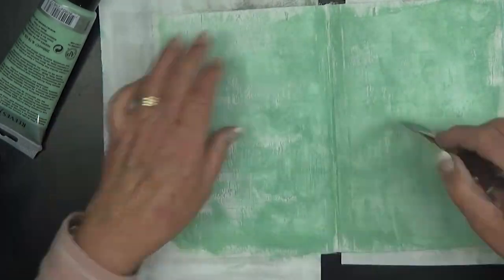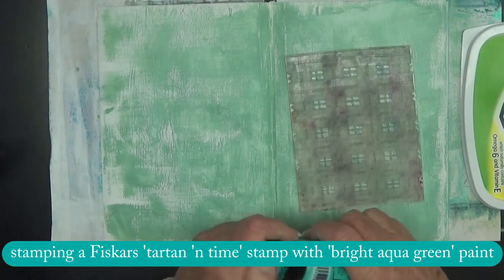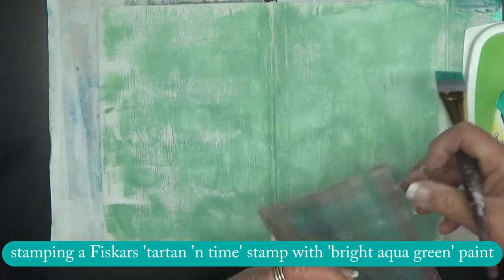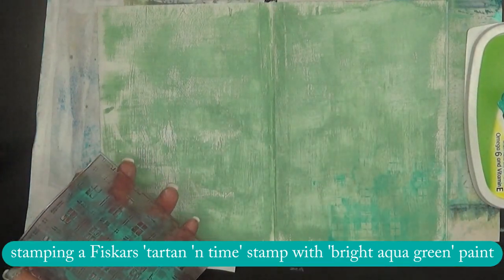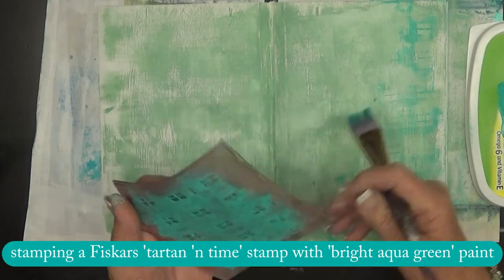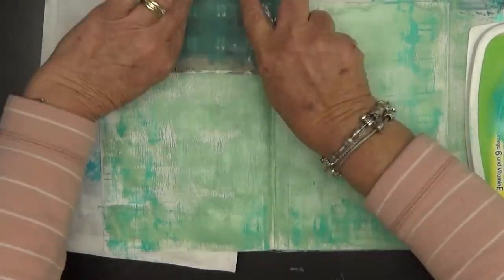I'm working with greens and browns today with a bit of blue and gold. I love this stamp and I love painting on it to stamp. It's a Fisker stamp from the Tartan and Thyme set and it's a great background stamp.